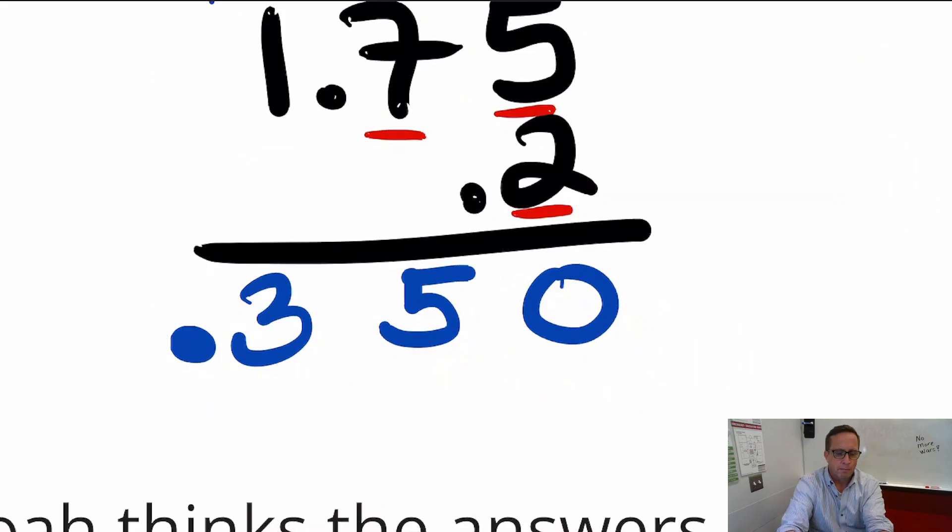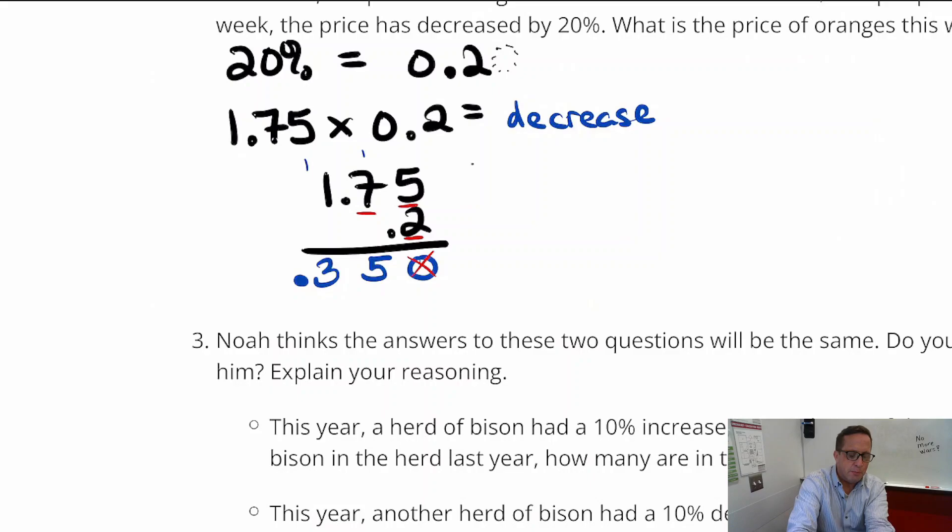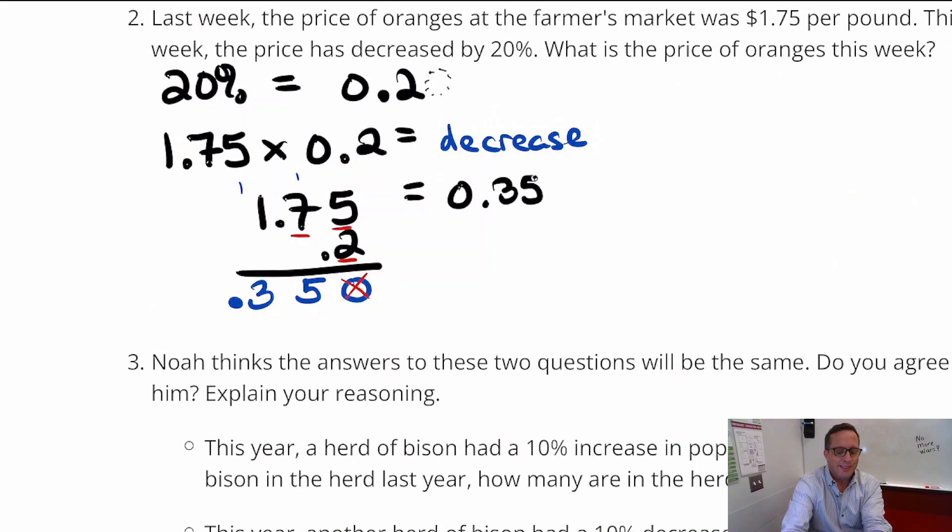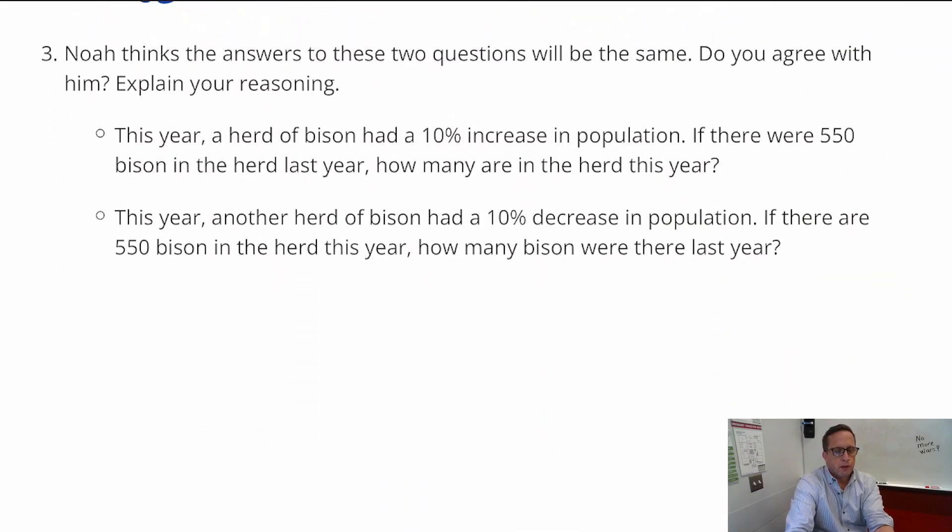So it's 1, 2, 3. So there it is. And there it is. Now we don't really need this 0 anymore, we can kind of cut that off. But right there we've got the price decrease. That's not the price, remember. That's how much it went down. So it went down 35 cents. So now just do $1.75 minus 35 cents. And you're going to get $1.40. $1.40 is the new price for the oranges. That's per pound.